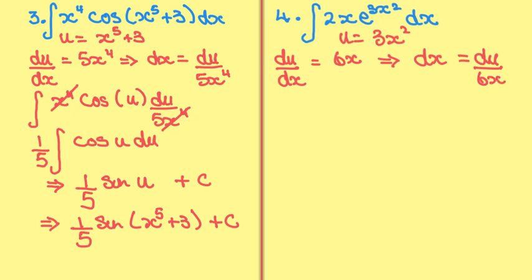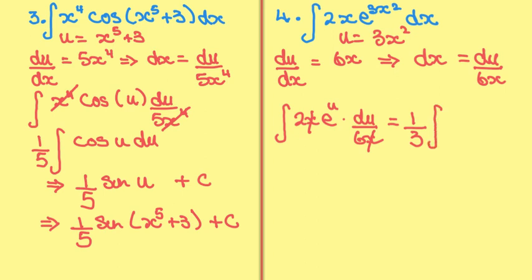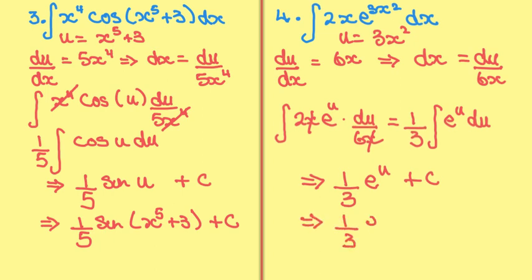Now I can substitute everything back in, so I'm left with the integral of 2x times e to the power of u times du over 6x. The x's cancel, and I'm left with 2 over 6, so I take one third outside the integral of e to the u du. The integral of e to the u is just e to the u, so therefore I get one third e to the u plus c. I know what u is, so therefore I get one third e to the power of 3x squared plus c.